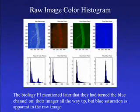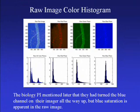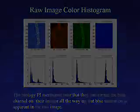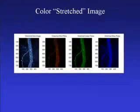Here is a histogram of the raw image. What leaps out here is the saturation in the blue color plane. All three planes were adjusted. The color-adjusted image is shown in the first panel.